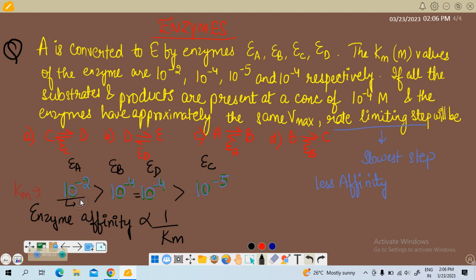So if according to this formula, according to this equation, if Km is highest, more, then enzyme affinity will be less. So that means EA will have less affinity. So EA, so option C that will be the answer of this. Okay, thank you.